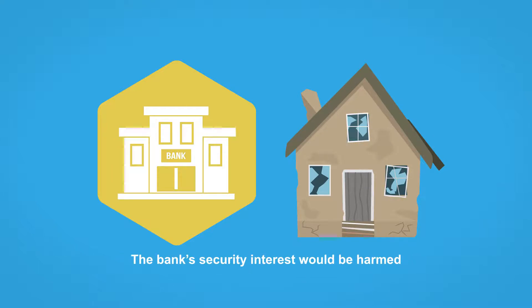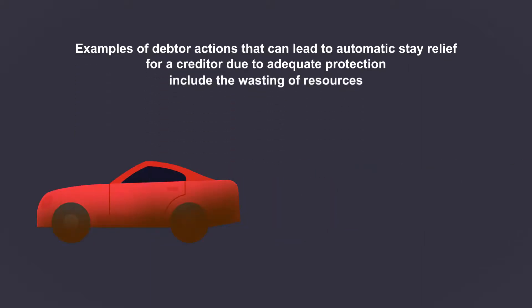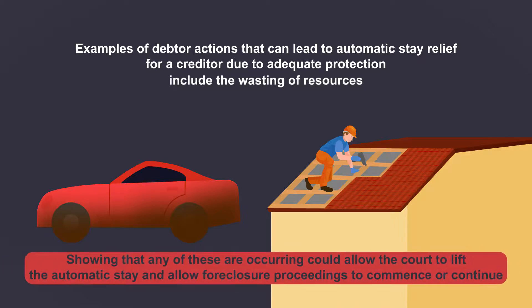Should the home lose value due to neglect by the debtor, the bank's security interest would be harmed. Examples of debtor actions that can lead to automatic stay relief for a creditor due to adequate protection include the wasting of resources — perhaps taking long, unnecessary road trips in the case of a car — or failing to make repairs to the roof of a house, or mismanagement and damage to the property. Showing that any of these are occurring could allow a court to lift the automatic stay and allow foreclosure proceedings to commence or to continue.